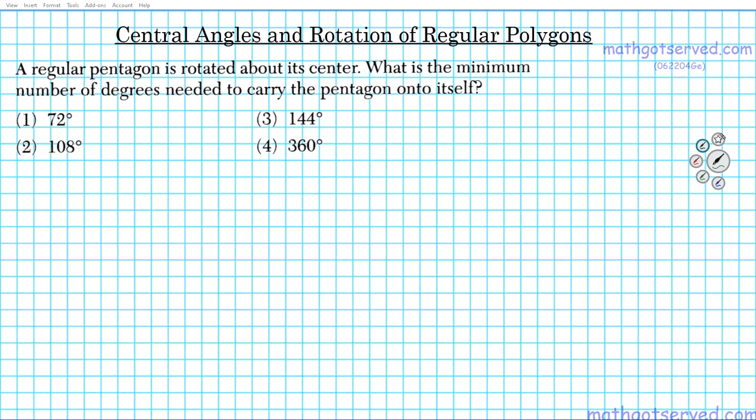Good day students, welcome to mathgotserved.com. In this clip we're going to be taking a look at an example on central angles and rotation of regular polygons. A question reads: a regular pentagon is rotated about its center. What is the minimum number of degrees needed to carry the pentagon onto itself?